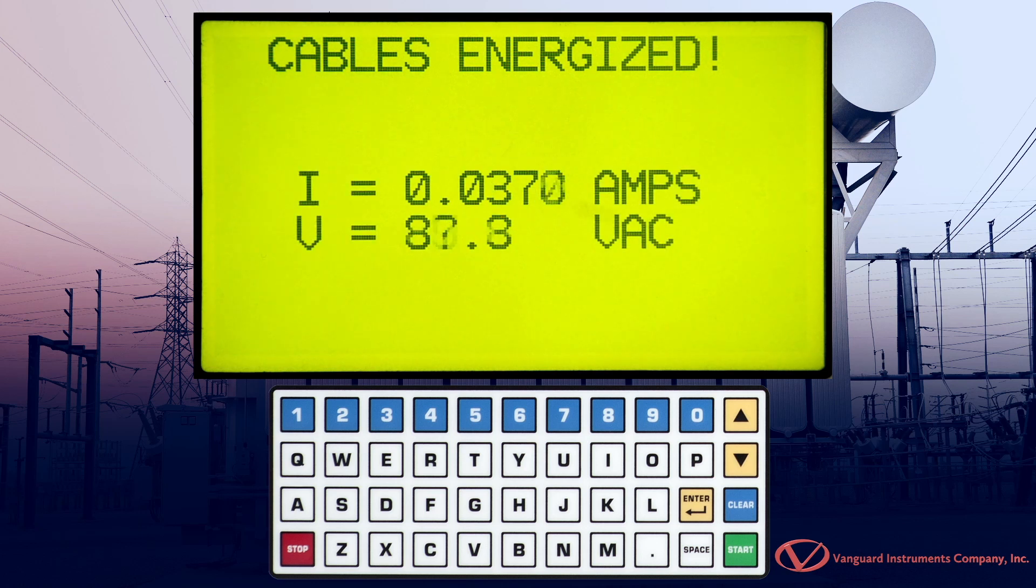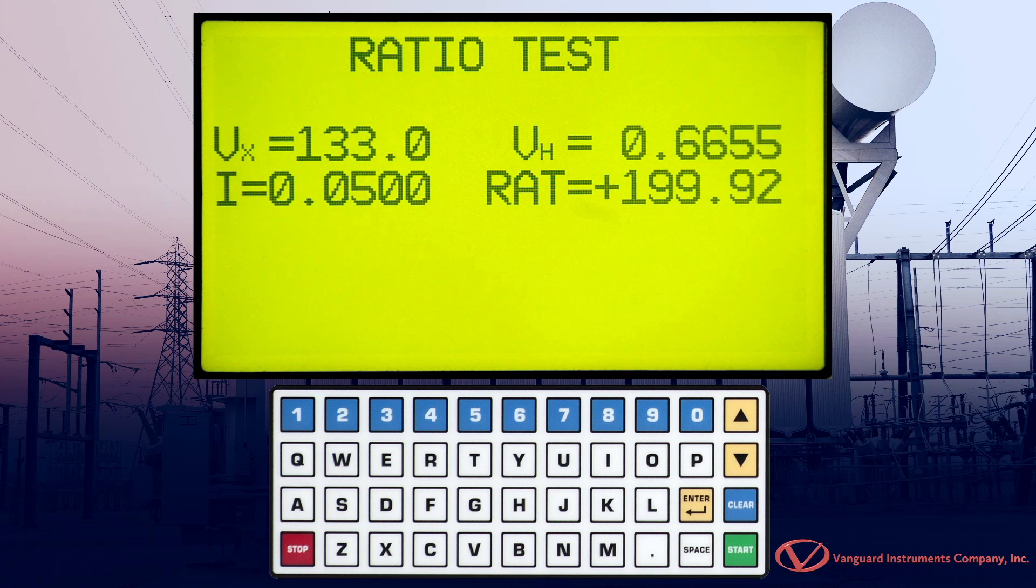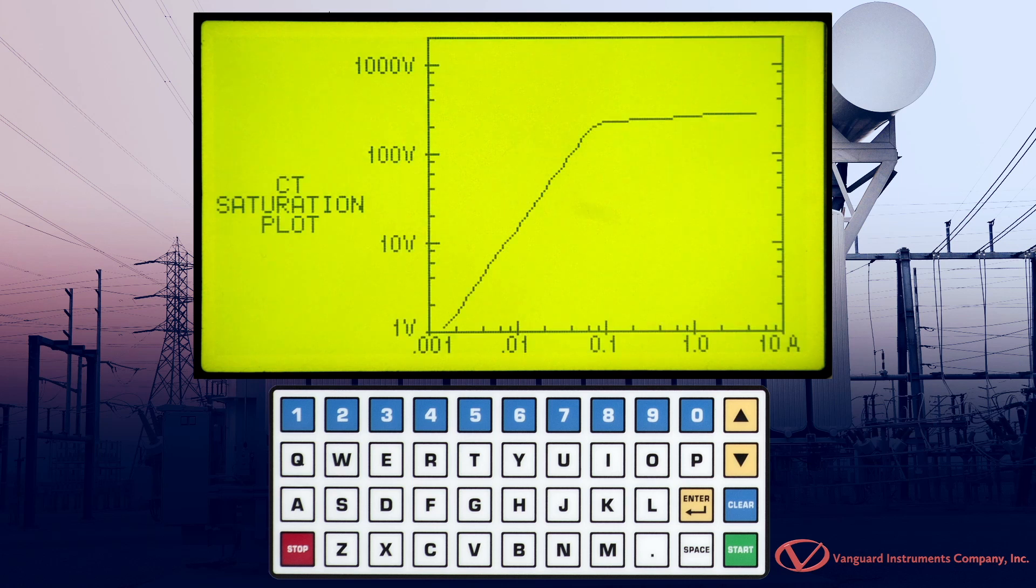Next, the ratio test will be performed. The voltage will be ramped up to the selected test voltage and then ramped down. When the testing is finished, the CT saturation curve will be displayed.